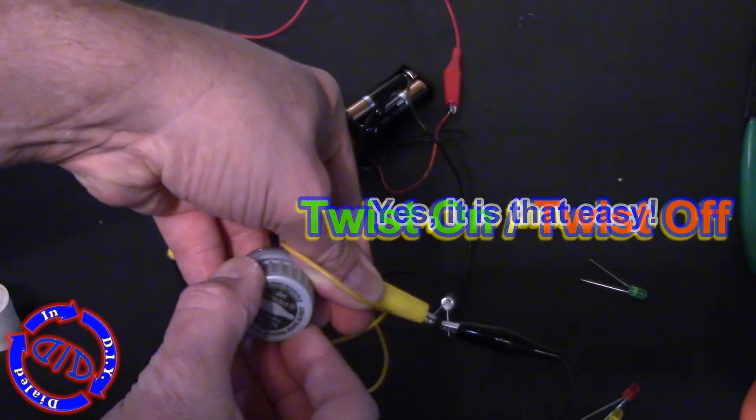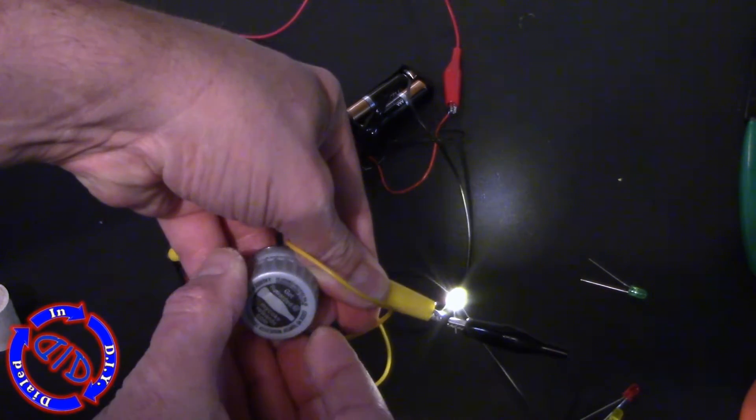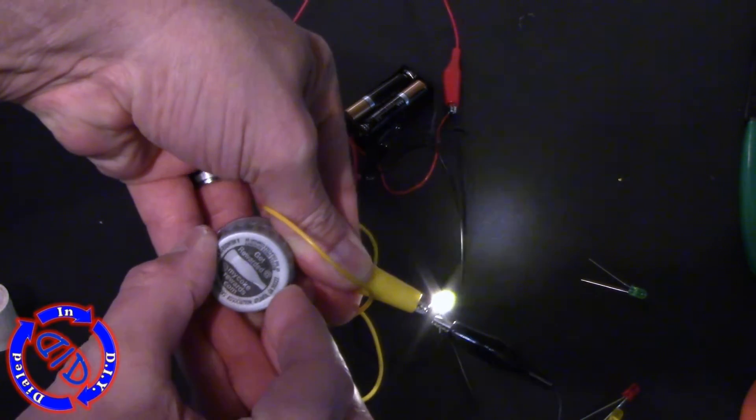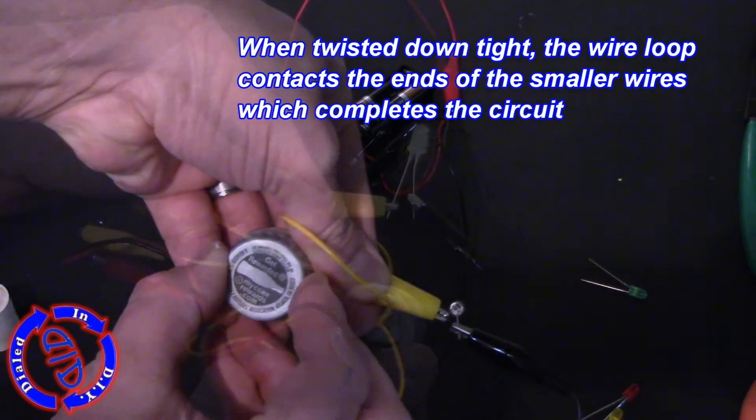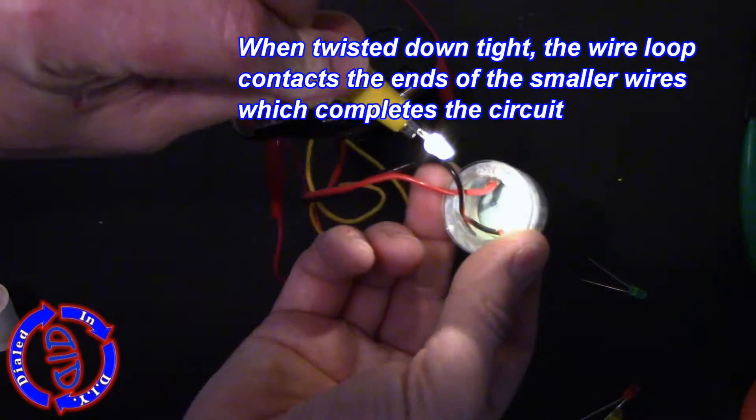So what I've done here is I've tested a few different LEDs using two batteries that give me a total of three volts. Then just twisting this back on and off it works fine for turning the lights on and off and this is great for many different projects.